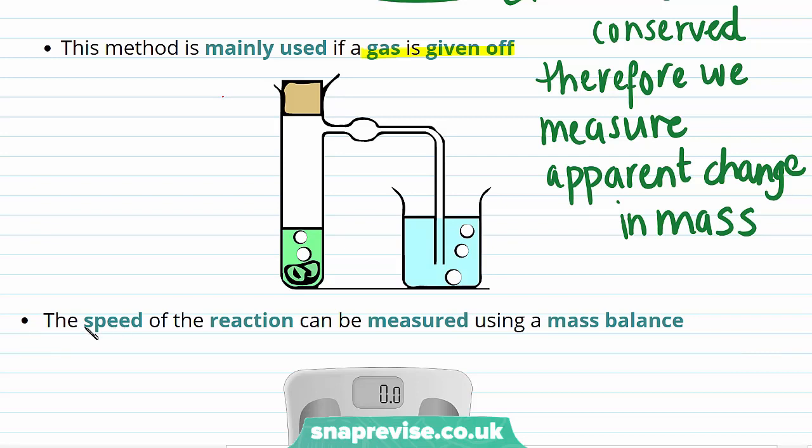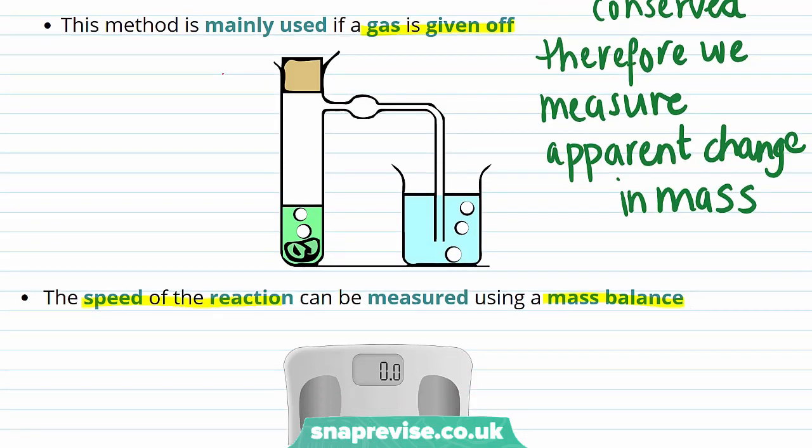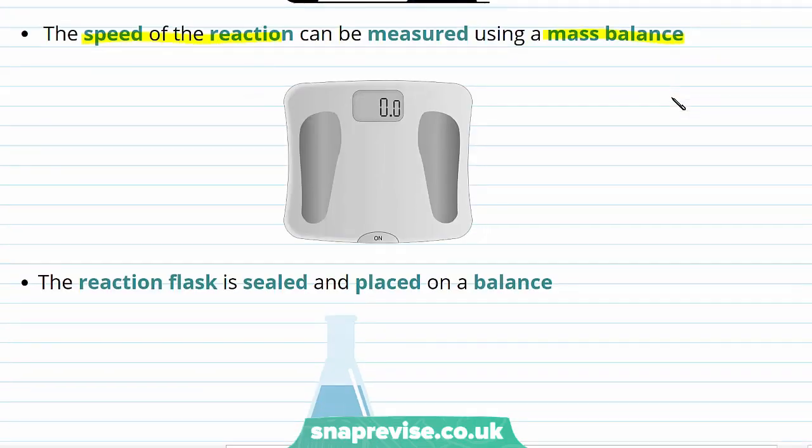In this sort of measurement, we therefore make an estimate of the speed of the reaction using the mass balance, which allows us to measure the mass of the reaction flask during the experiment.